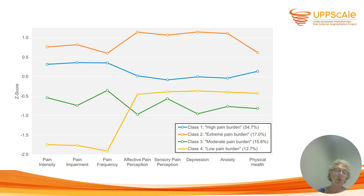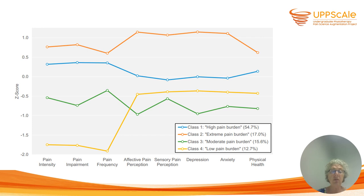In this study, you can see the Z-score — the Z-score is the mean of all patients together, and a deviation from the Z-score means a standard deviation from the mean. Class 1 is high pain burden: they score above average on pain, but do about average on sensory pain perception, affective pain perception, and depression and anxiety — so higher on pain but average on distress. The extreme pain burden class scores very high on pain variables — pain intensity and pain impairment — and also scores high on distress. Whereas the low pain burden class scores well below the mean and scores about average, actually slightly lower, on distress.